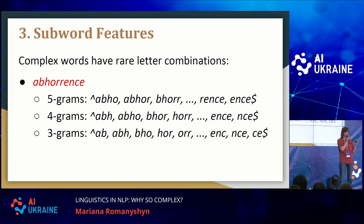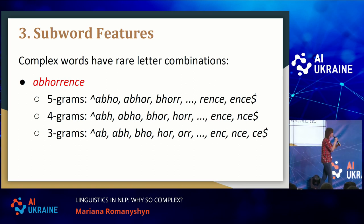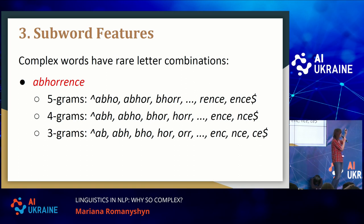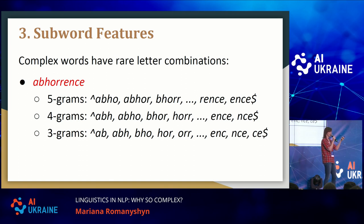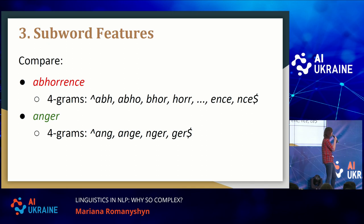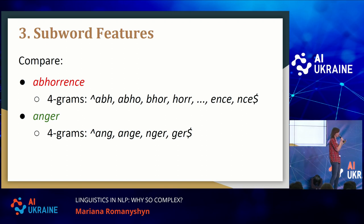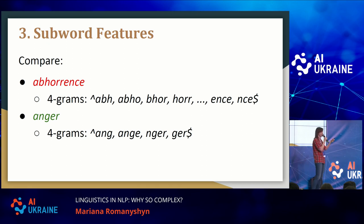If we go a level lower from morphemes to letters, we can extract word features from character sequences — called character n-grams. If you take a complex word and model sequences of four or five characters, you can see that those character combinations are quite unusual — you cannot think of other words that contain them. But if you take a simpler counterpart — for example, "abhorrence" means "anger" — and look at four-grams of "anger," you can think of many words like "hunger," "rage," or "danger" that contain those character combinations. So character n-grams are a very good feature for identifying complex words.